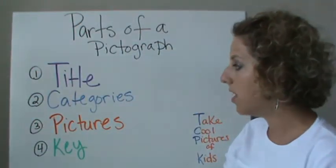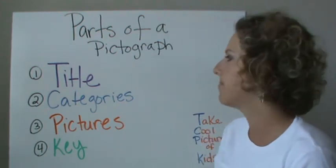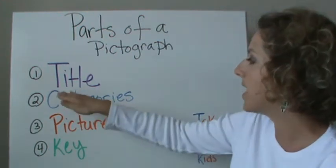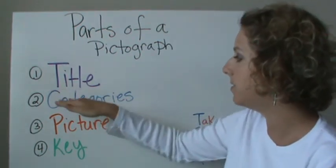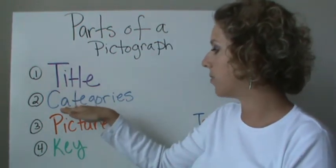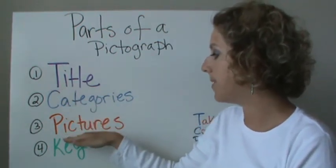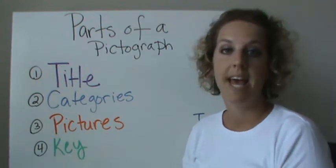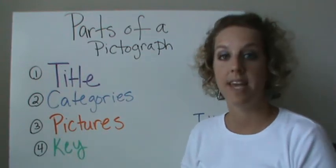There are four parts to a picture graph. We have the title, the categories, the pictures, and of course the key.